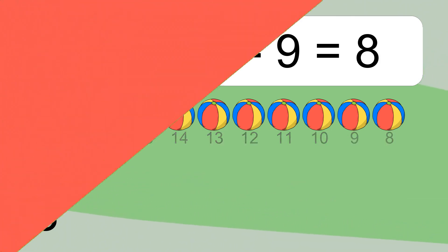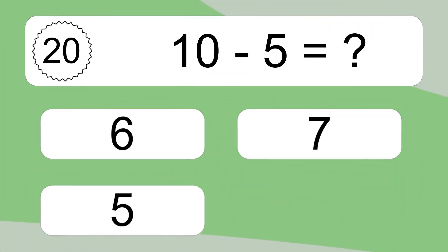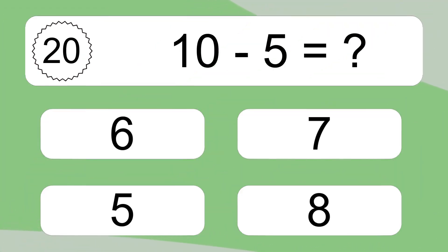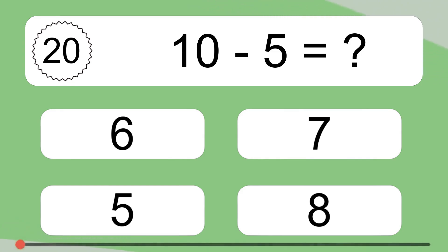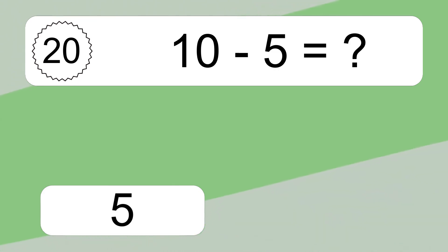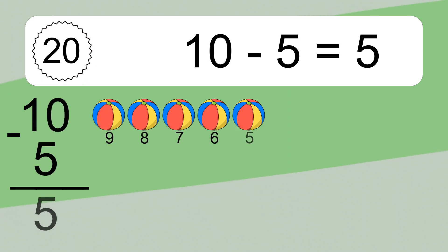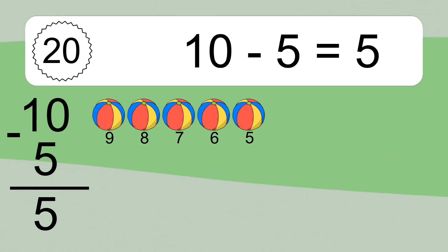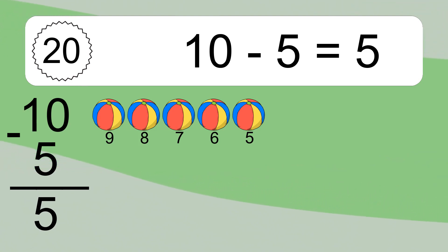10 minus 5 equals what? 10 minus 5 equals 5. Let's count it. 9, 8, 7, 6, 5.